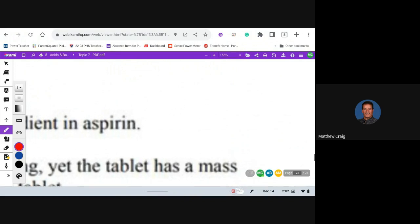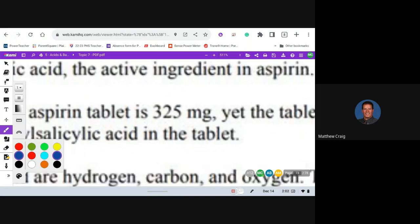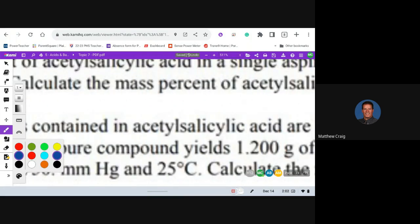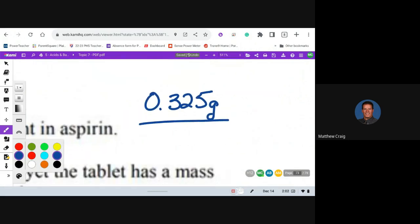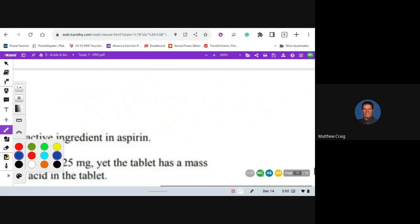We know we have 325 milligrams, also known as 0.325 grams, and it's in what size? Two grams, times 100 equals 16 and a quarter. We'll say 16.3 percent. That was a tough point, guys.